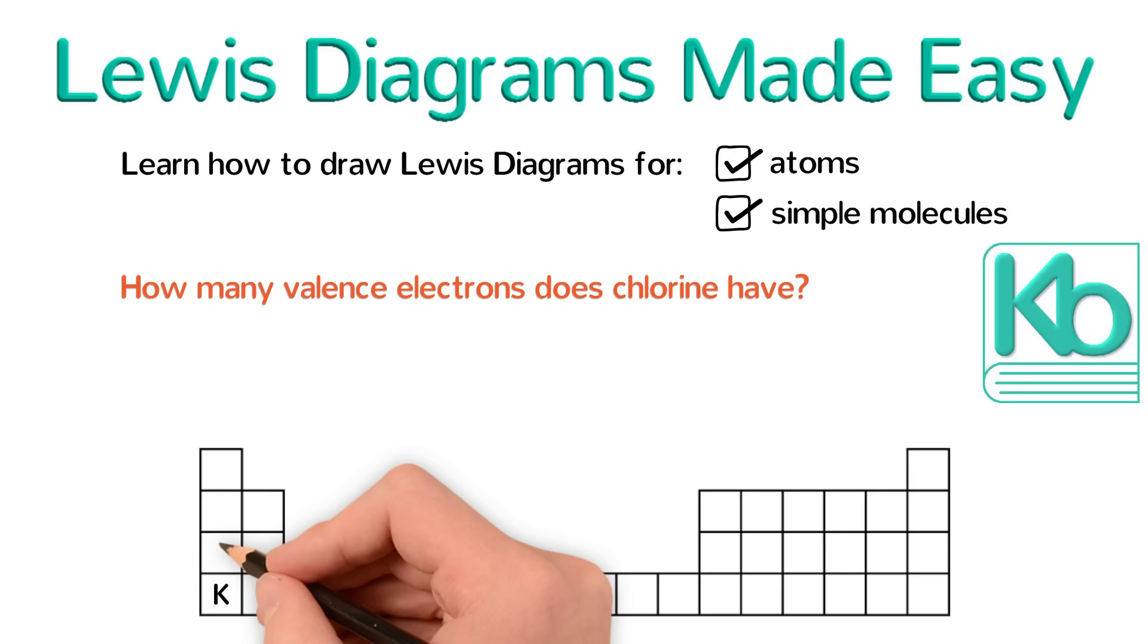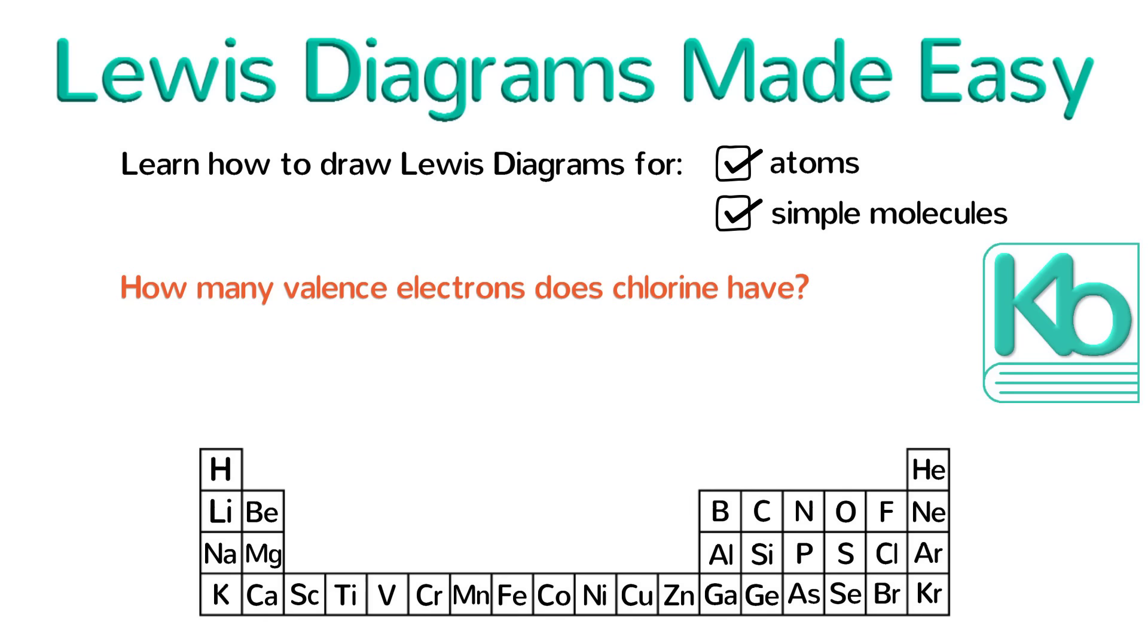In order to answer that question, we need to look at the periodic table. Remember that within any given column, all the elements have the same number of valence electrons. To get that number, all we need to do is count the columns starting from the left. Skip the transition metals and remember that the only exception to this is helium, which has only two valence electrons, not eight.